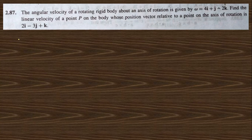Next, question 2.87: the angular velocity of a rotating rigid body about an axis is ω = 4i cap + j cap − 2k cap. Find the linear velocity of the point whose position vector is r = 2i cap − 3j cap + k cap.